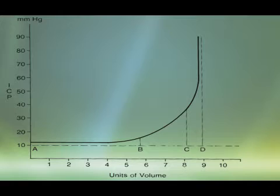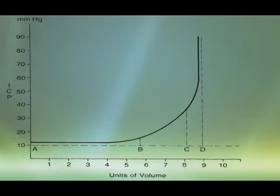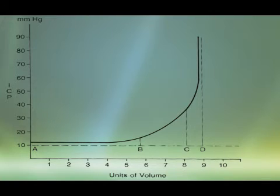However, compliance is decreasing. From A to B we added volume and pressure remained normal — high compliance. From B to C we added volume and saw a spike in intracranial pressure — low compliance. Between points C and D, compliance is lost entirely, resulting in a severe spike in intracranial pressure.